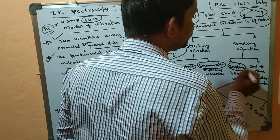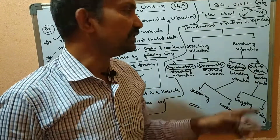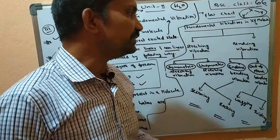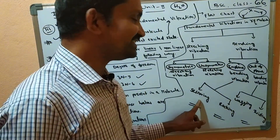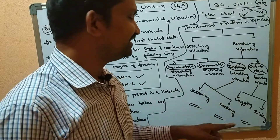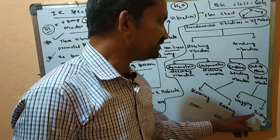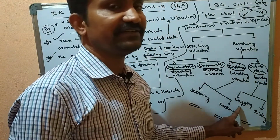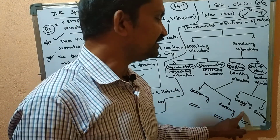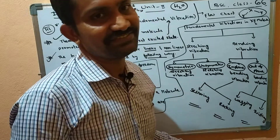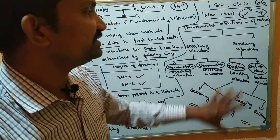Bending vibrations are divided into in-plane bending and out-of-plane bending. In-plane bending includes scissoring and rocking. Out-of-plane bending includes wagging and twisting. This completes the flow chart showing all vibration types: symmetric, unsymmetric, scissoring, rocking, wagging, and twisting.